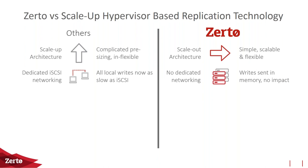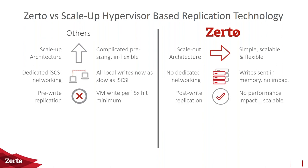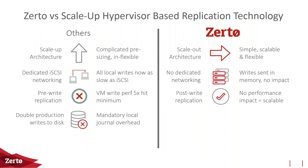No dedicated network is required, though Zerto recommends a dedicated replication network or VLAN. Writes are sent in memory — it's post-write, which is the asynchronous part — watching the IO stream down to storage. Once confirmed that it wrote locally, a copy of that block is sent to the other side with no impact at all. If your network or storage on the other side is as fast as memory, you'll have extremely low RPOs. If RPOs climb, it's usually because the network or storage is being taxed. You can scale from 3 VMs to 20,000 VMs with no performance impact to protected VMs.